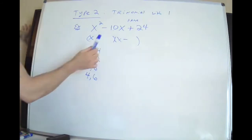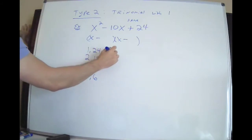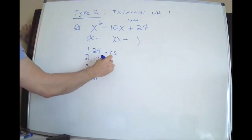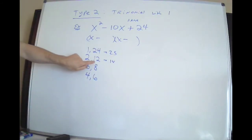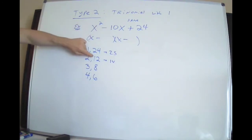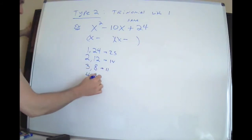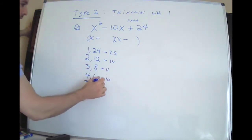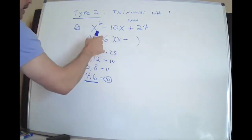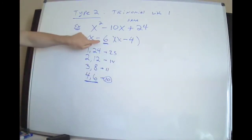My signs are the same, so I'm going to add all my pairs together and try to make 10. 24 and one make 25. 12 and two make 14. Now I want to point something out — if you subtract 12 and two, you make 10. So if you did the wrong thing and subtracted instead of adding, you got screwed and you're going to pick the wrong pair. Eight plus three make 11. Six plus four — ding ding ding, I have a winner. Six plus four make 10. Put the bigger number here and the smaller number here. The signs are the same — the bigger number has to go first. I will show you why in the other examples.